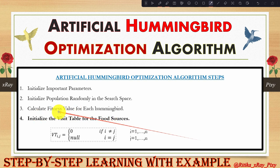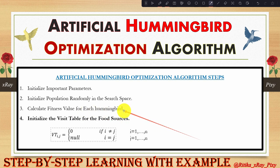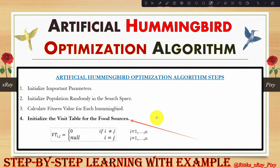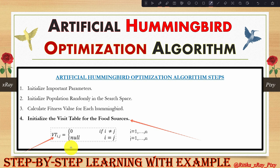Using the fitness function, we calculate the fitness values for each hummingbird in the current population. The next step is to initialize the visit table for food sources. Just as real hummingbirds remember food source locations and other details, the visit table allows each hummingbird to find its target food source and records the time since it last visited. The visit table is initialized using a dedicated equation.